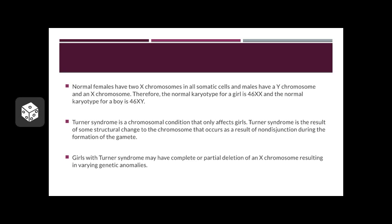Turner Syndrome is a chromosomal condition that only affects girls. It's the result of some structural change to the chromosome and it occurs as a result of non-disjunction during the formation of the gamete. Girls with Turner Syndrome may have complete or partial deletion of an X chromosome, resulting in varying genetic anomalies.